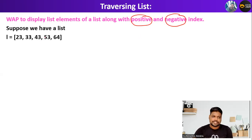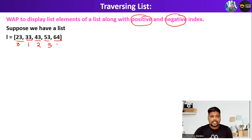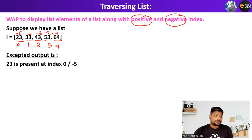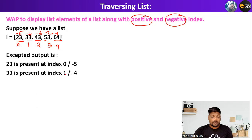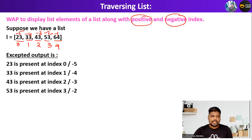Suppose you have a list L equal to 23, 33, 43, 53, and 64. You have to display each item along with its index. The positive indices are 0, 1, 2, 3, and 4. The negative indices are minus 5, minus 4, minus 3, minus 2, and minus 1. So the expected output is: 23 is present at index 0 and minus 5; 33 at index 1 and minus 4; 43 at index 2 and minus 3; 53 at index 3 and minus 2; 64 at index 4 and minus 1.